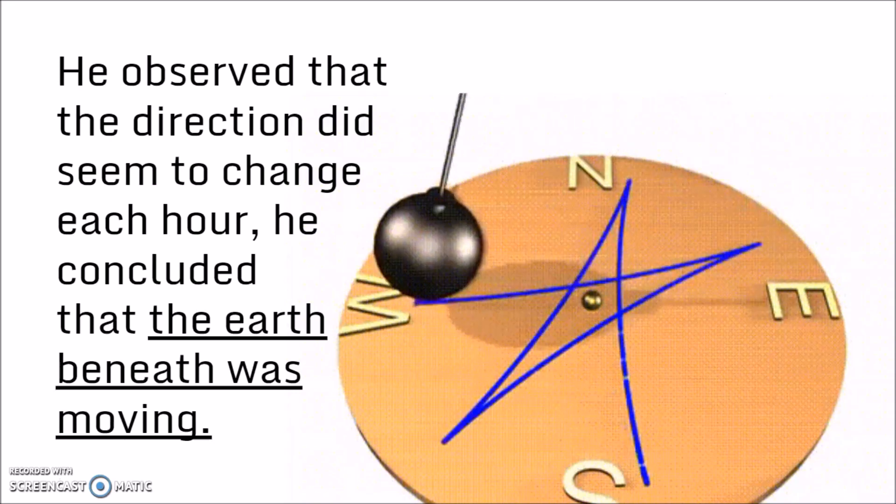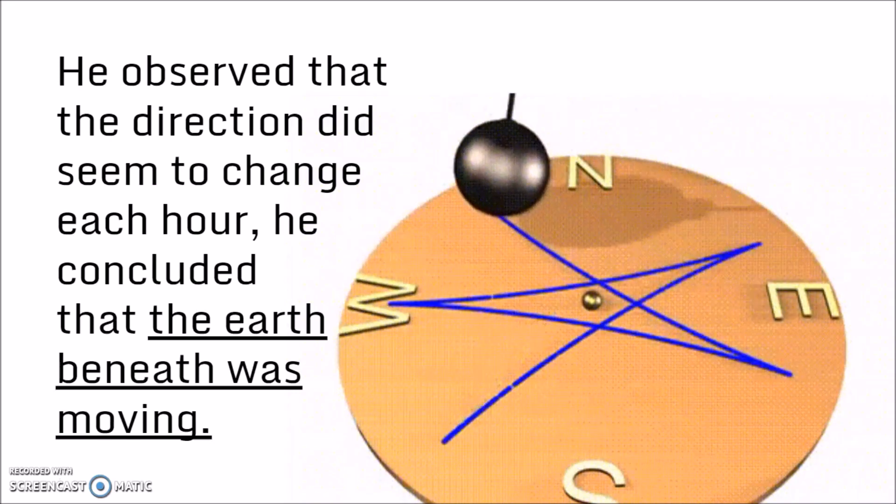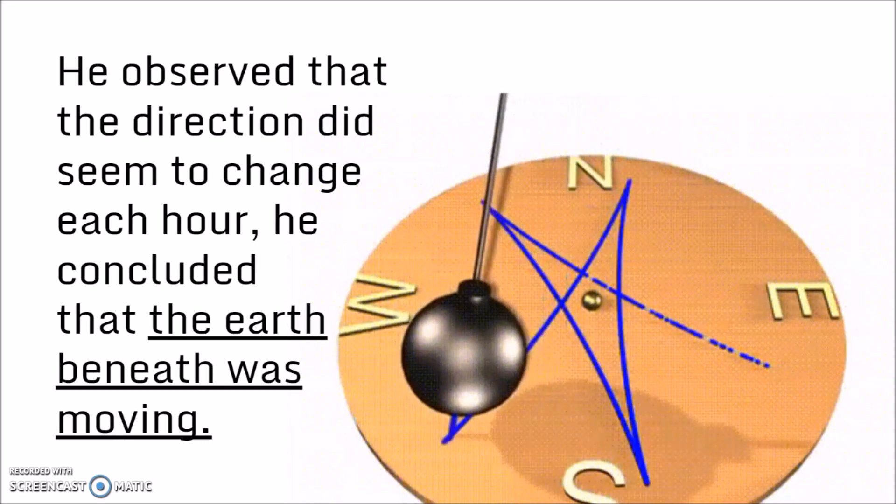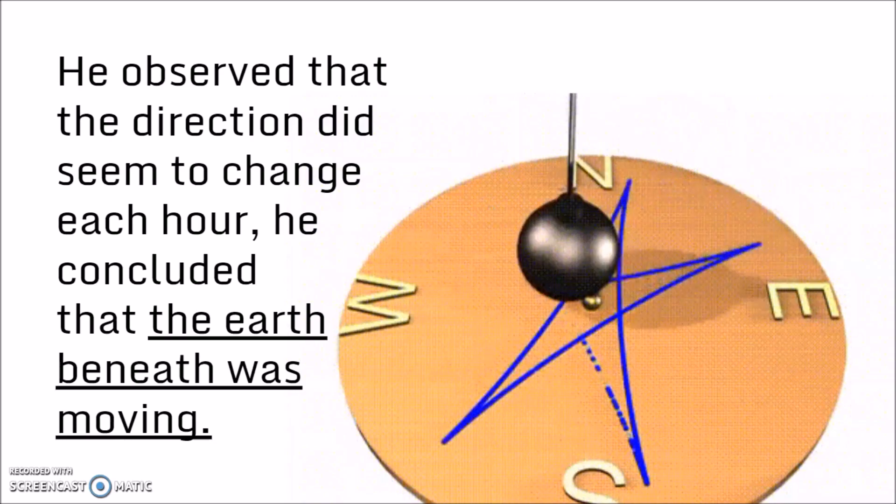Each hour it shifted clockwise, but because the pendulum can't change direction, he concluded that the Earth beneath it was moving. This was the first piece of evidence that the Earth was rotating.